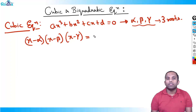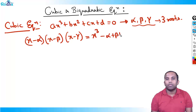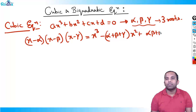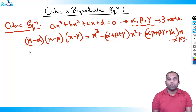This result is very important — please listen carefully. The expansion gives: x³ − (α+β+γ)x² + (αβ+βγ+γα)x − αβγ = 0. This is the general form of any cubic equation.